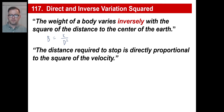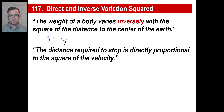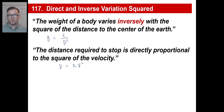The distance required to stop is directly proportional to the square of the velocity. That shouldn't be that big of a deal. Distance required to stop is directly proportional, so that's going to be K times velocity squared. You just square the velocity. Same old thing we did before.